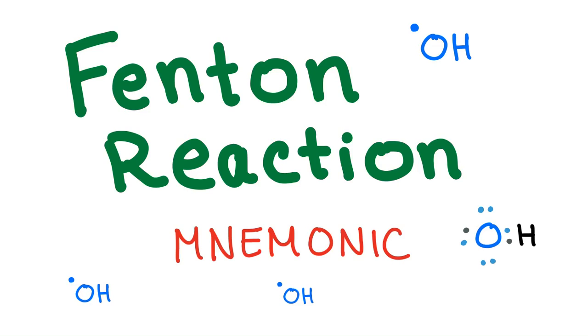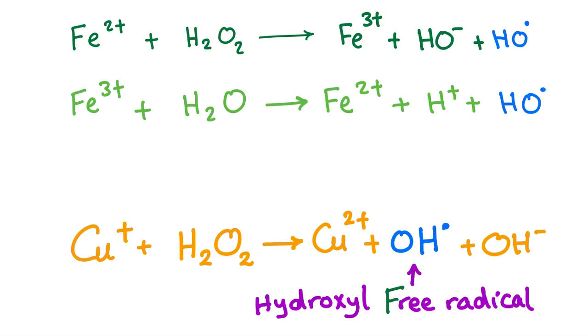The Fenton reaction applies to iron and can also apply to copper, but mainly it's for iron. Remember: Fenton, Fe - Fenton, Fe. As you see here, the end result has hydroxyl free radical.